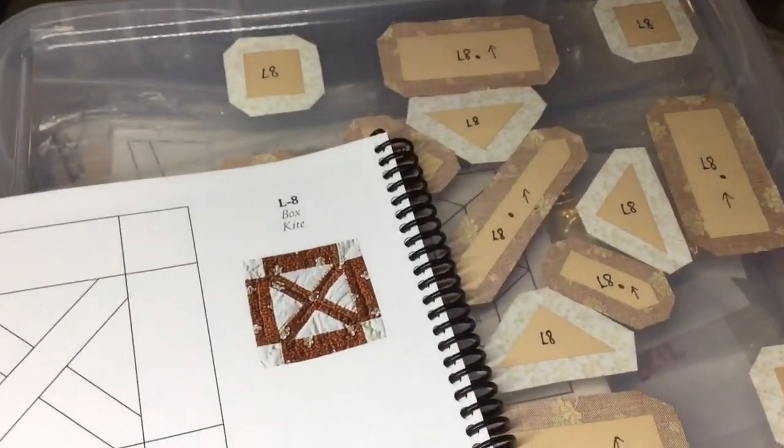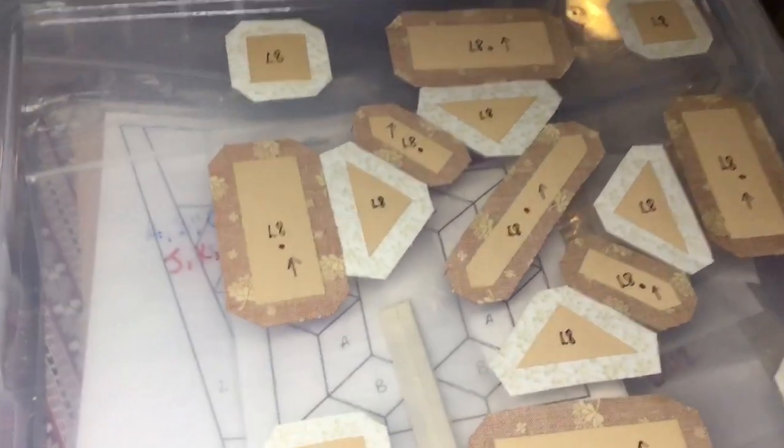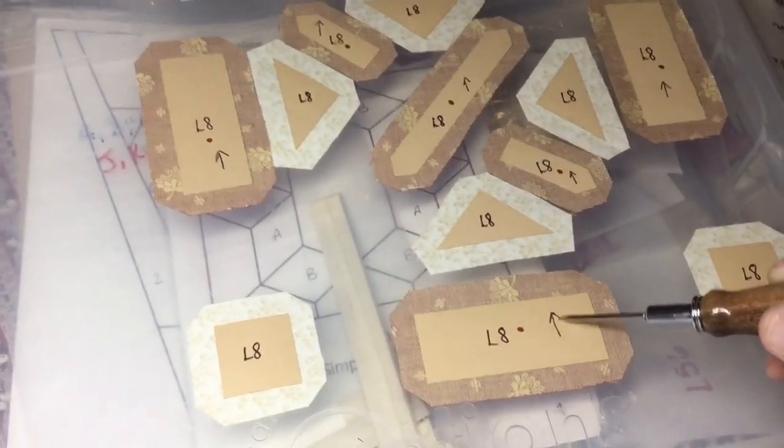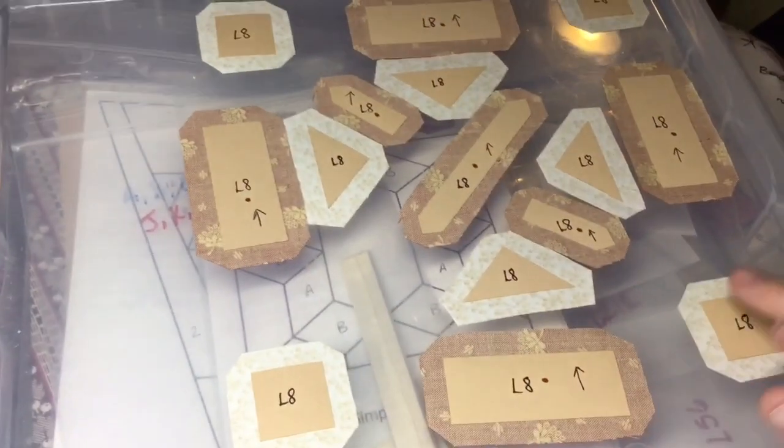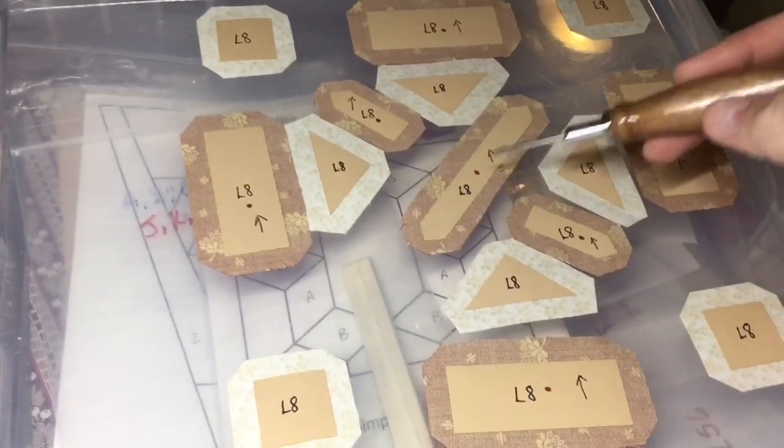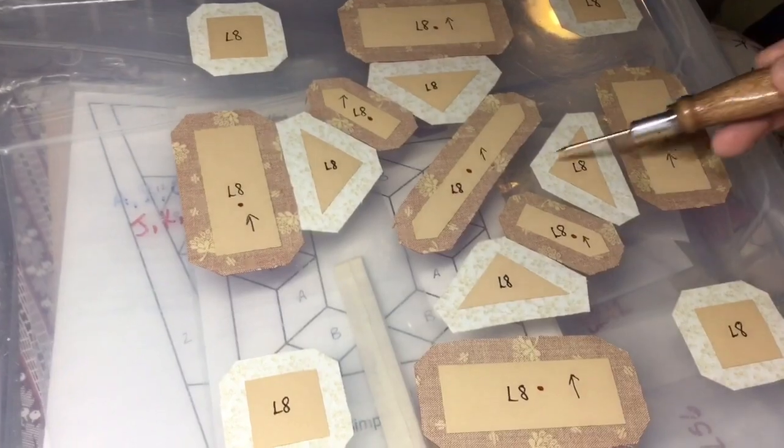Here are my pieces. I have a directional fabric for my focus fabric, so I have marked each one with an arrow going in the same direction for every piece. For basting, I'm going to start with these units here.